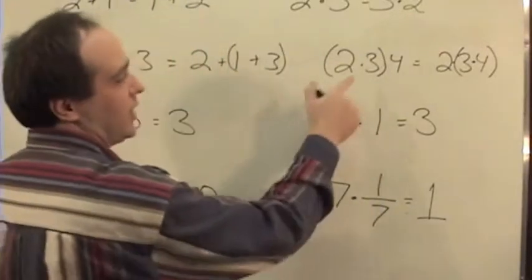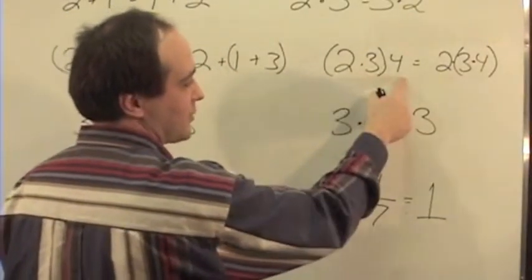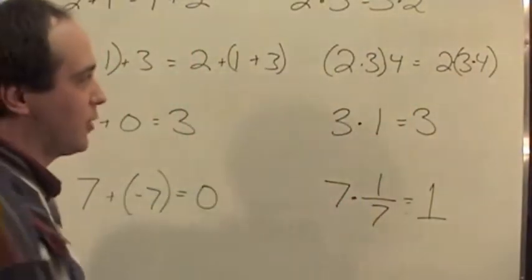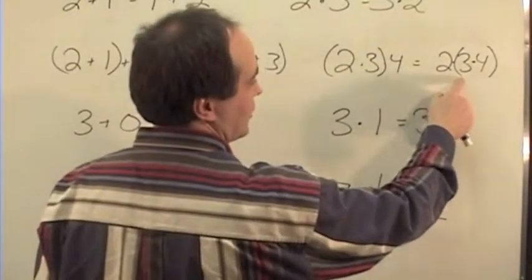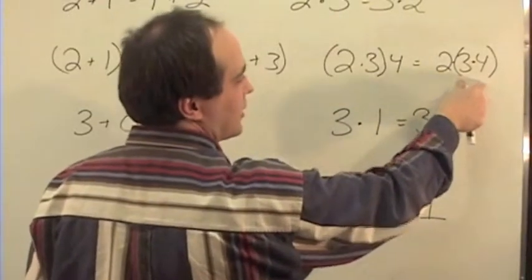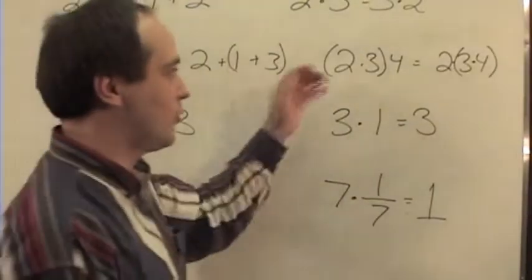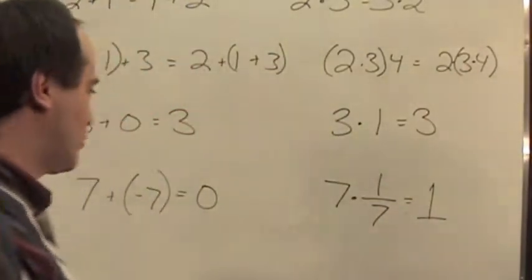Same thing over here in multiplication. 2 times 3 times 4, where I do 2 times 3 is 6 times 4, is going to give me 24, or I can do 2 times 3 times 4, where I do 3 times 4 first, which is 12, times 2 is still going to give me 24. So associative property works as long as they're all multiplied, it doesn't matter which order.